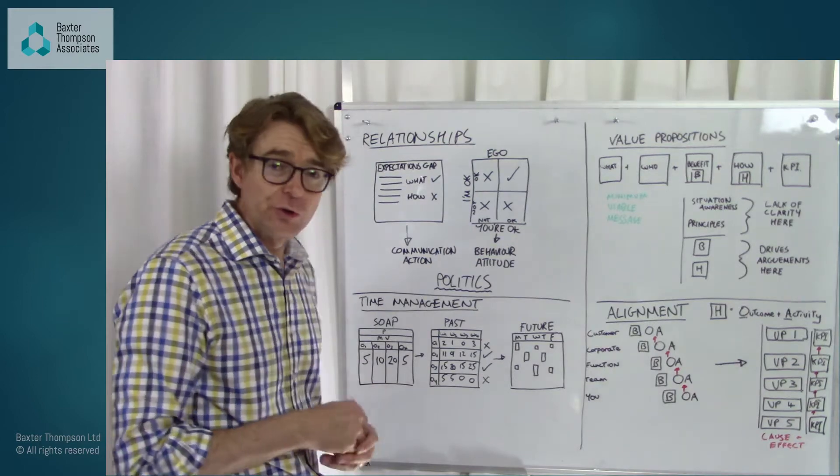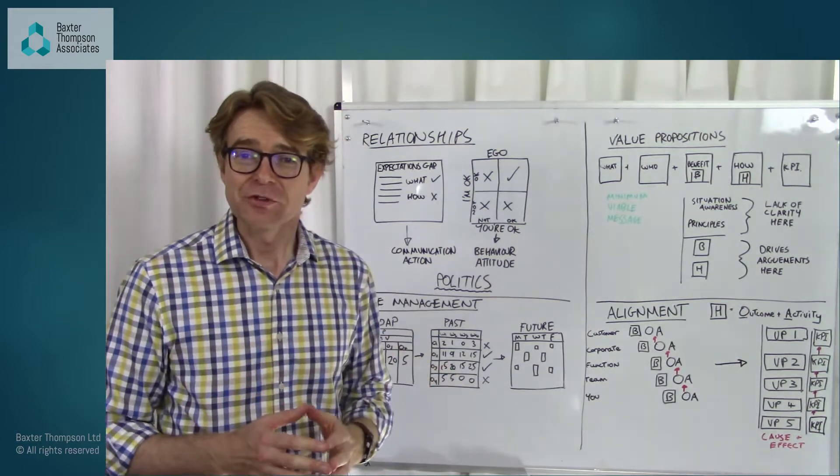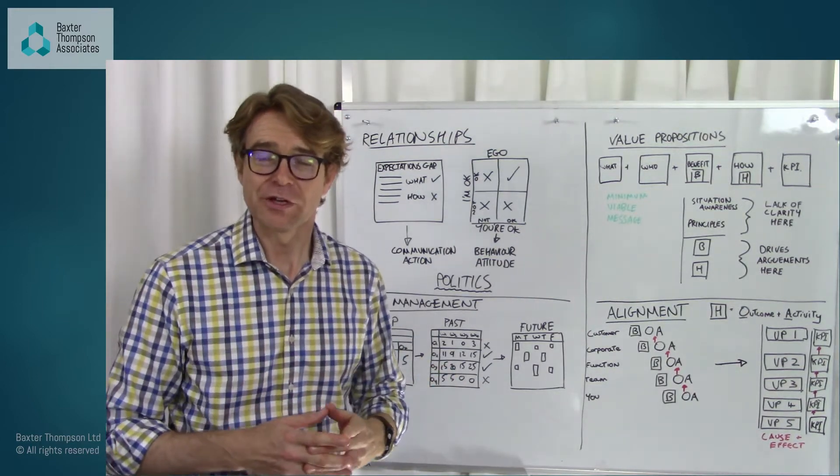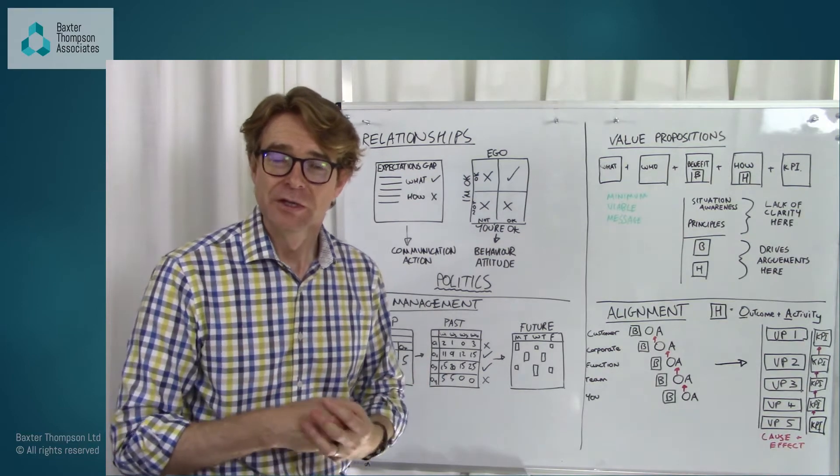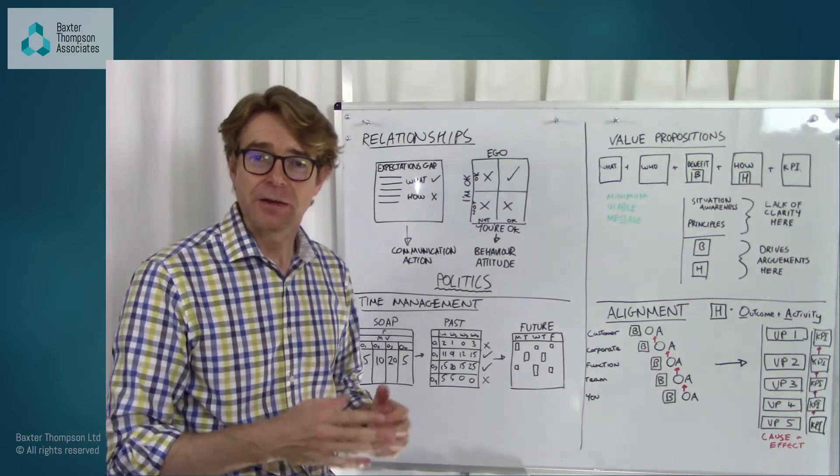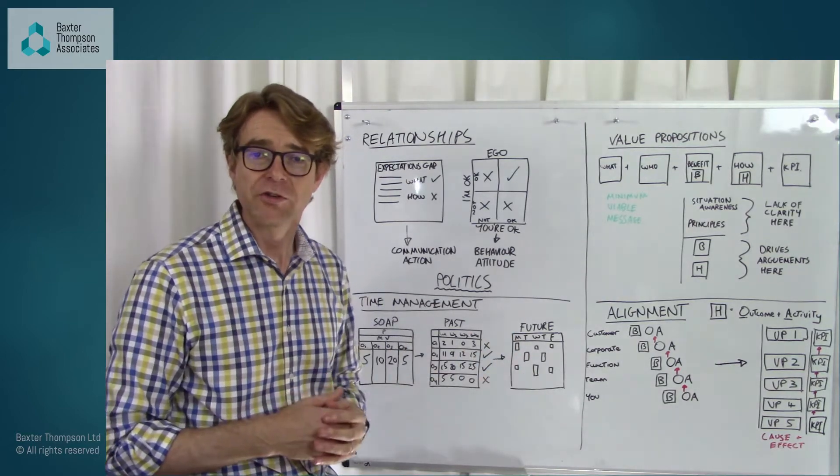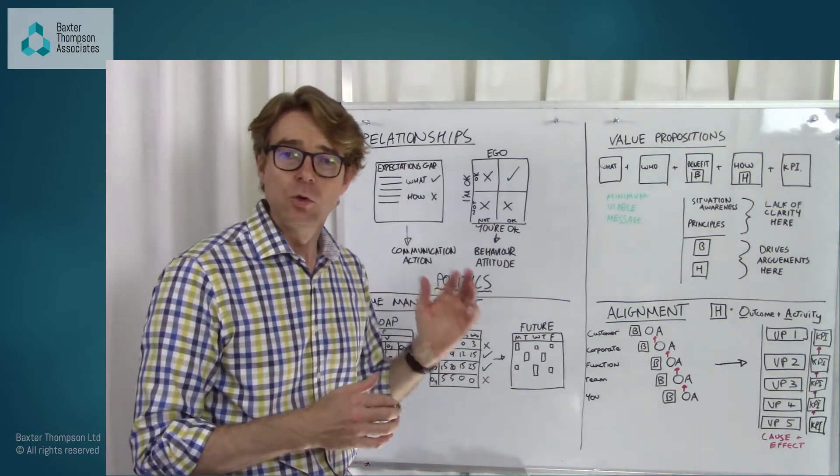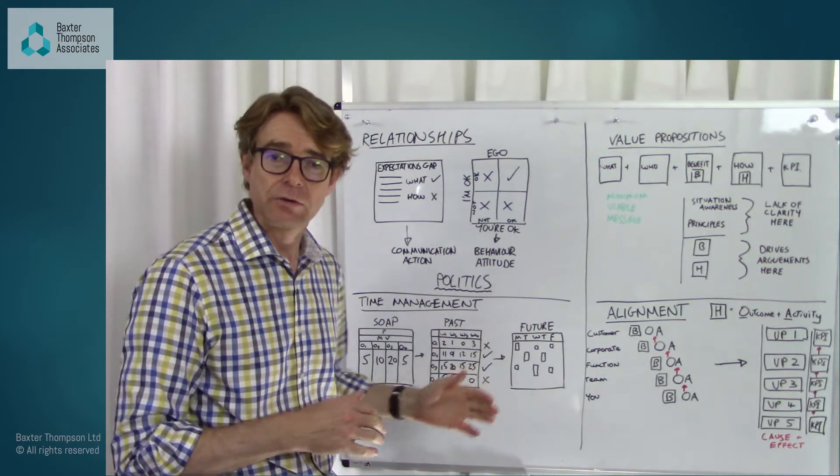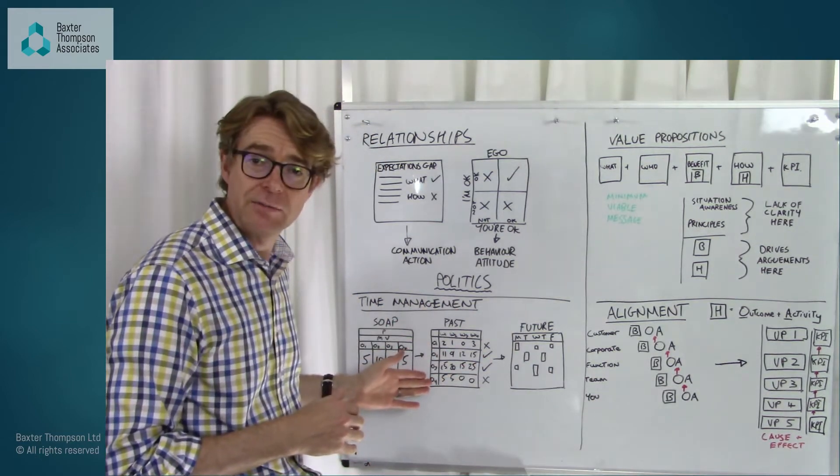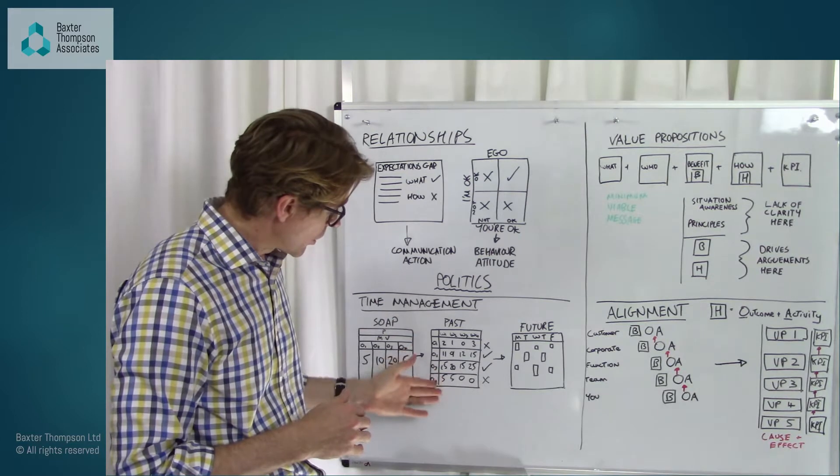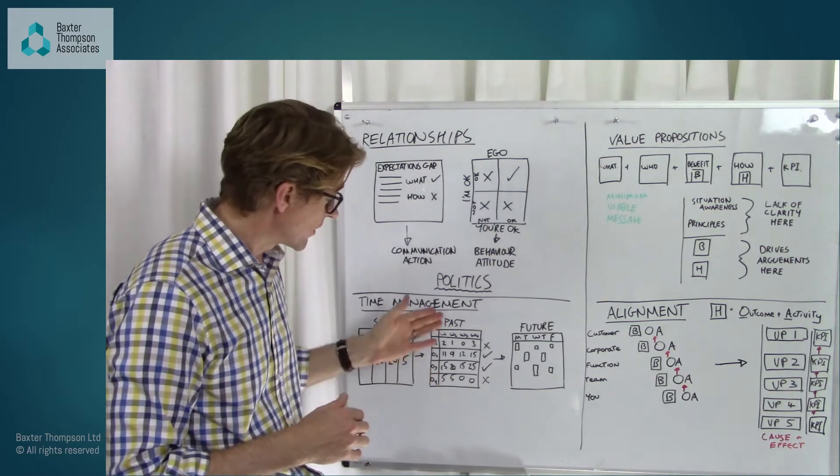So effectively what you do is you do timesheets. But a simplistic approach to timesheets. You're not doing war and peace on how you did a toilet break or anything like that. But it's saying, okay, well if I've got four outcomes or four objectives, how much time did I spend working towards those individual outcomes? And you track them. So this is quite a simple timesheet at the end of the day.